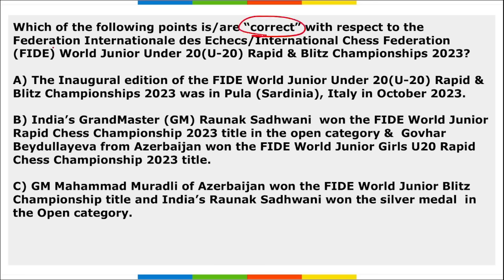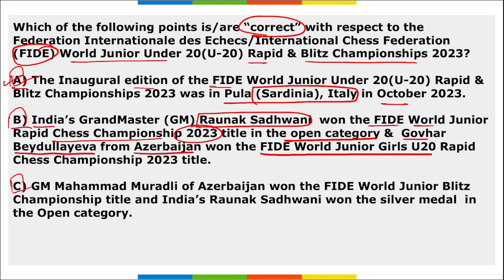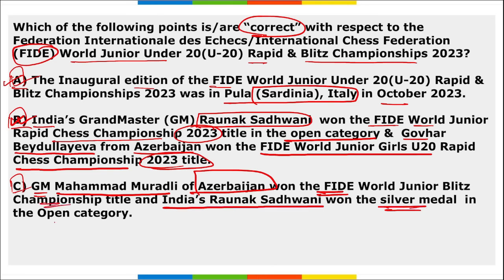Regarding the FIDE World Junior Under-20 Rapid and Blitz Championship: all three options are rightly mentioned. The inaugural edition was held in Sardinia, Italy. India's Grandmaster Raunak Sadwani won the FIDE World Junior Rapid Chess Championship 2023 in the open category. Gohar Beydullayeva of Azerbaijan won the Girls' Rapid title. Mohamed Muradli of Azerbaijan won the Blitz Championship, and Raunak Sadwani won silver in the blitz open category.